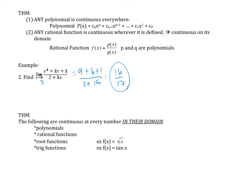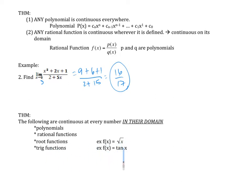The following are continuous everywhere in their domain: polynomials, rational functions, root functions — an example would be the square root of x — and trig functions, an example being tangent of x. Be careful — I'm just saying in that domain.